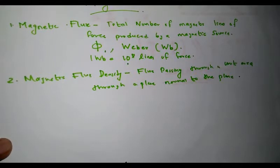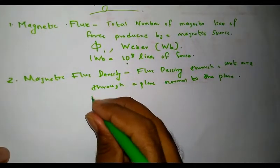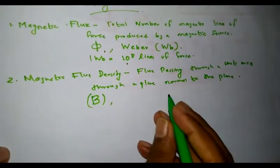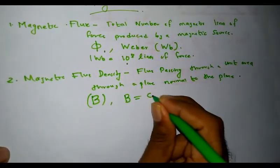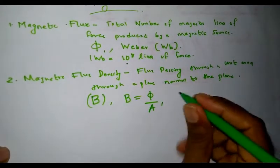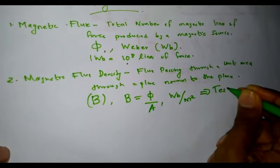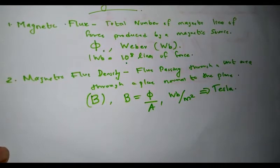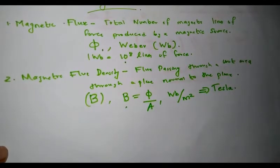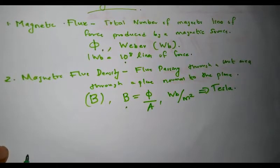Magnetic flux density is denoted by the symbol capital B. It is equal to flux per unit area, i.e., B = Φ / A. Its unit is Weber per meter square, and Weber per meter square is termed as Tesla, after the famous Nikola Tesla. Here A is the area of the surface in meter square.